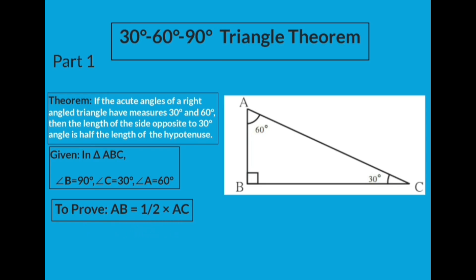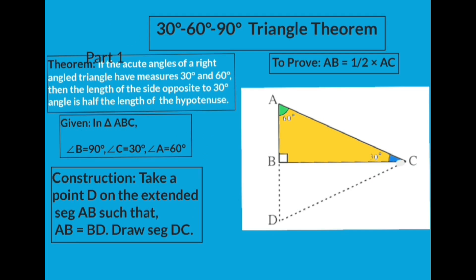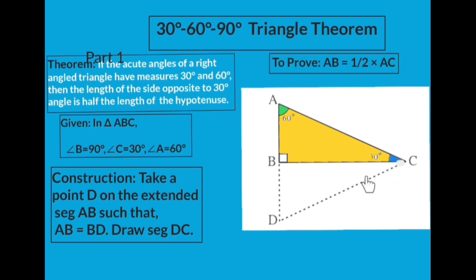First, we need to do a construction. Take point D on extended segment AB such that AB equals BD, then join point D with point C. Let's draw segment CD. This completes the construction.